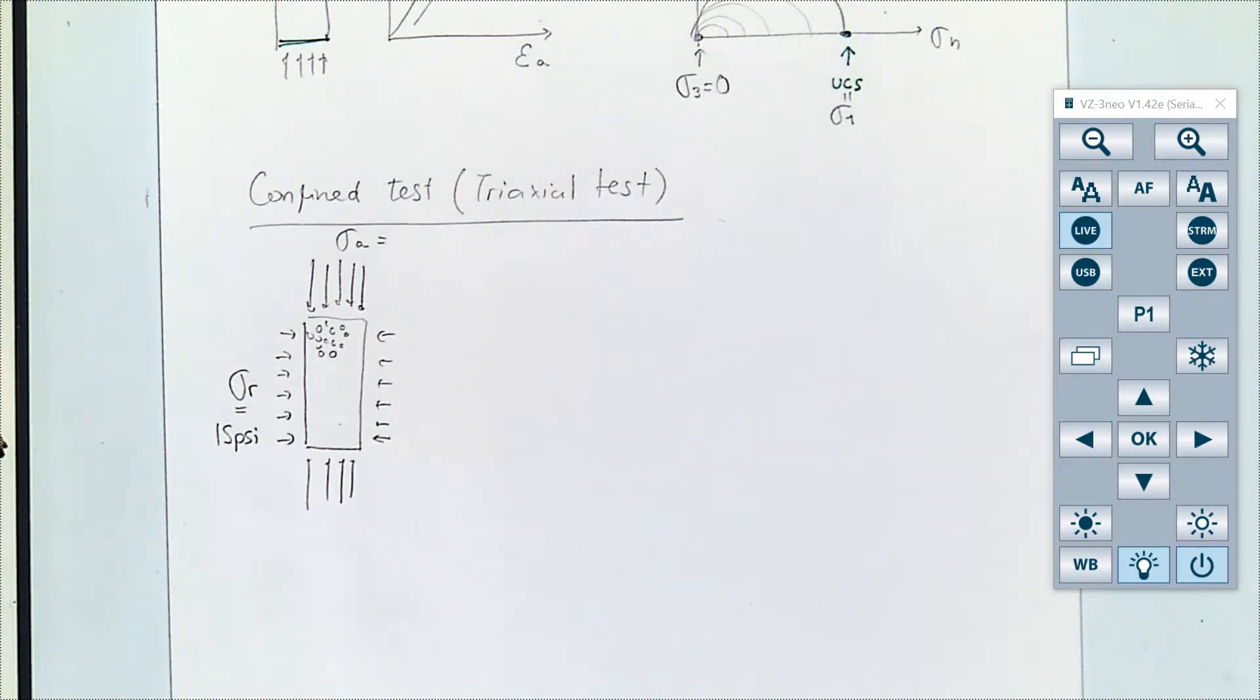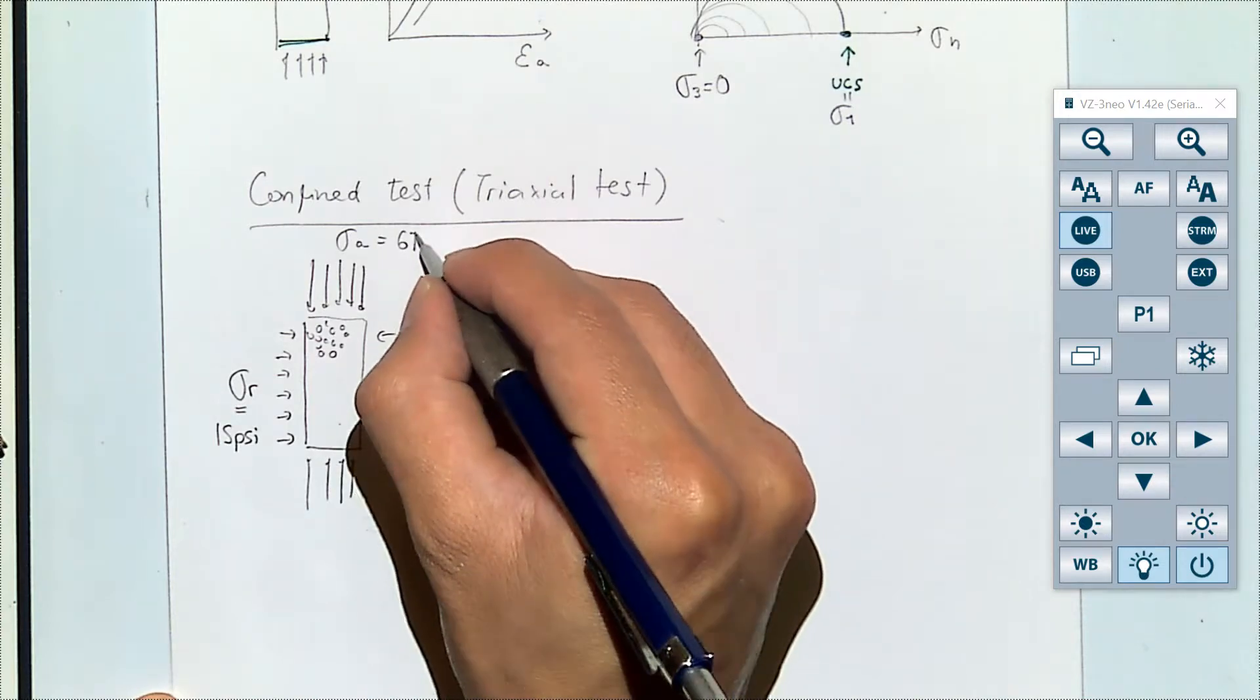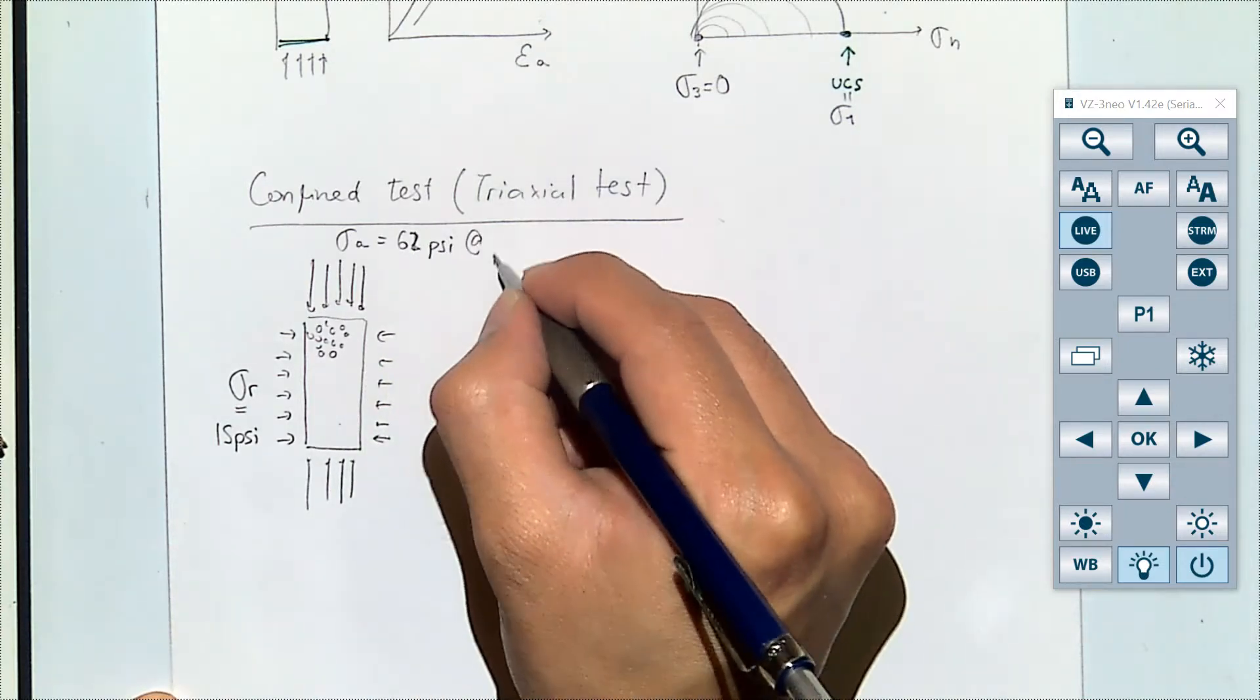We calculated to be how much it was: 500 divided by 8.1, so how much is 500 divided by 8.1? That should be like 61.7, so let's say 62 psi at failure.